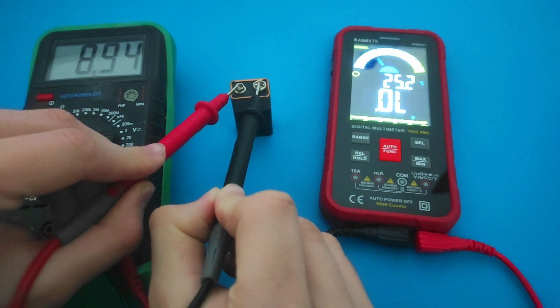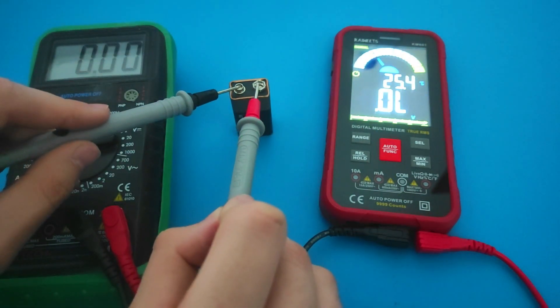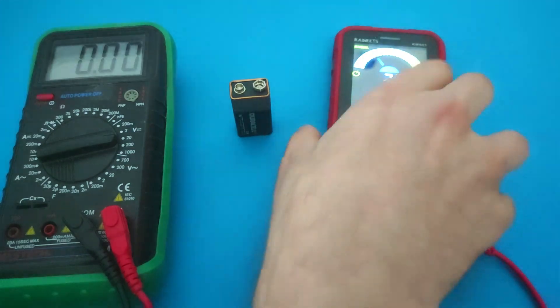The overload problem can also occur on digital multimeters if you do not set them to auto range.